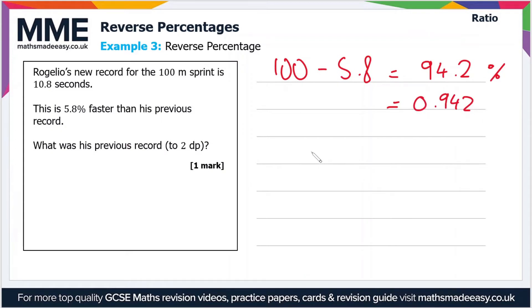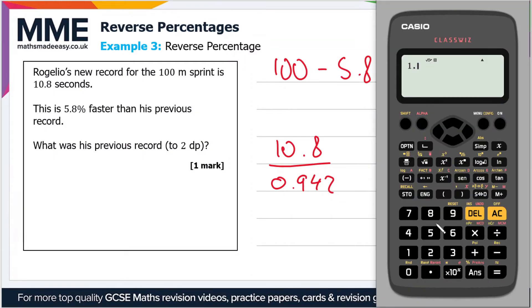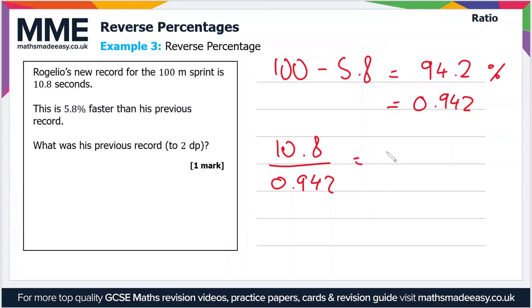If we want to work out what his previous time is, all we have to do is divide his new time of 10.8 by 0.942. So using a calculator, 10.8 divided by 0.942 gives us a value of 11.46 to two decimal places, or 11.5 seconds to one decimal place. So 11.5 seconds is his original time.